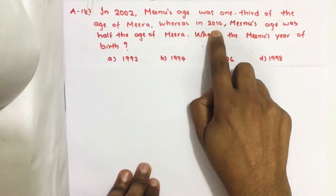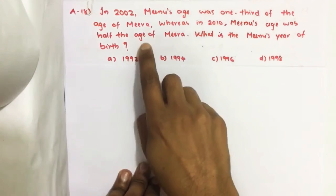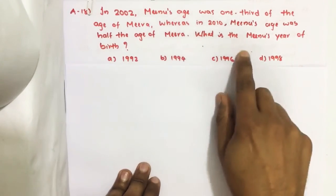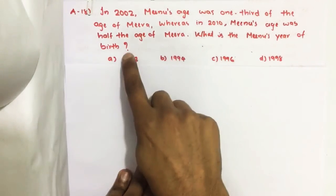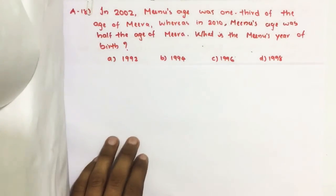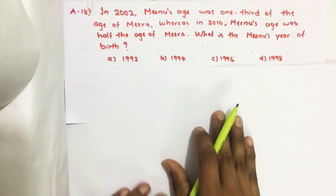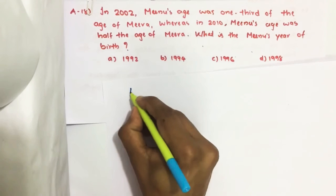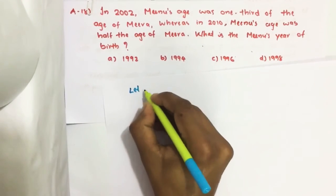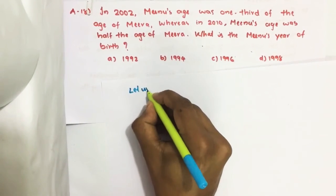Whereas in 2010, Minoo's age was half of the age of Mira. What is Minoo's year of birth? That is the question. So to solve this question, let us take...